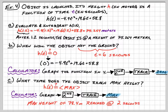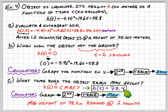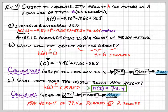So algebraically, h of 2 equals 78.4 is our maximum. The time is 2 seconds and the maximum height output is 78.4 meters. Alright, that's it for these notes — I'll see you in class.